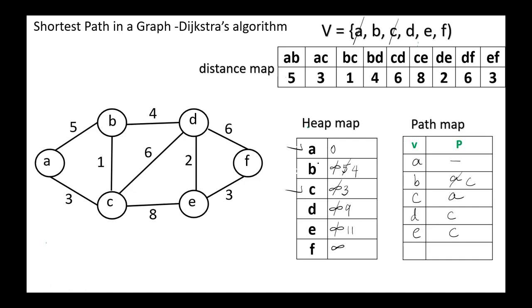Among the remaining vertices, vertex B has the minimum distance. B is connected to A (visited), to C (visited), and to D with distance four: four plus four equals eight, less than nine, so we update this value to eight. We fix that the parent of D is now B. B is not connected to any other unvisited vertices, so we remove B and mark it as visited.